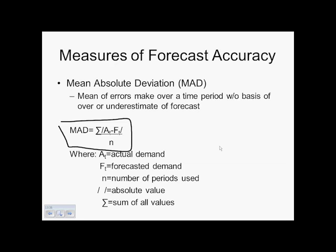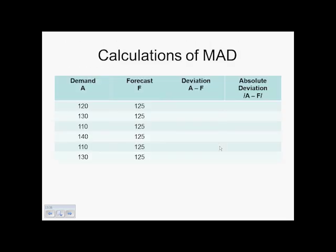So we're going to be using that formula when we take a look at MAD. So calculating here we have our actual demand A, our forecasted demand F, and we want to find the deviation of that, A minus F. And literally that is just taking our demand minus the forecasted demand.